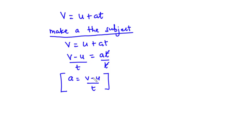So we've been able to make a the subject of this relation. When we talk about change of subject, you have a formula or relation and you are asked to make a different variable the subject — that variable must stand alone. In certain cases, values will be given and you'll be asked to make substitutions into the formula. Now let's move on and solve a couple of examples.